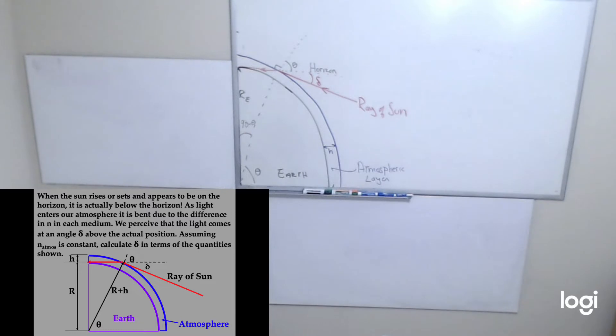We perceive that the light comes at an angle delta above the actual position. If we call the index of refraction of the atmosphere n_atmosphere, and we assume that it's constant in the atmosphere, which is not really the case, but we're going to build a simpler model. We want to calculate that angle delta in terms of the quantity shown, which is the radius of the earth and the height of the atmospheric layer.